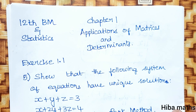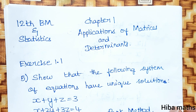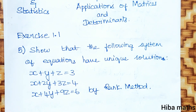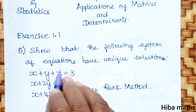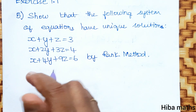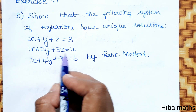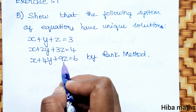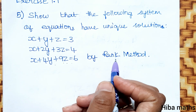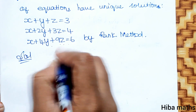Hello students, welcome to Heba Max 12th standard Business Maths and Statistics, Chapter 1: Applications of Matrices and Determinants. This is question 1.1, fifth question: show that the following system of equations has a unique solution. x plus y plus z equals 3, x plus 2y plus 3z equals 4, x plus 4y plus 9z equals 6. We will solve this by the rank method.